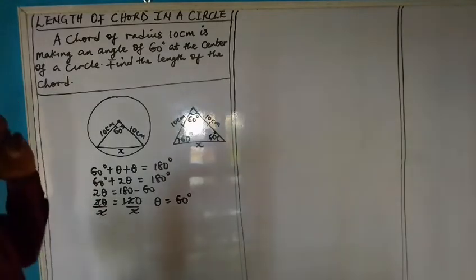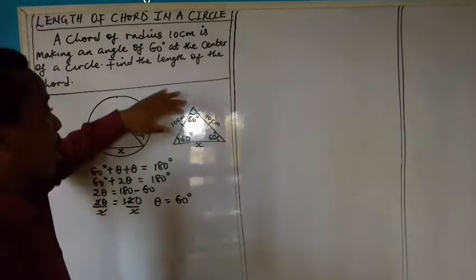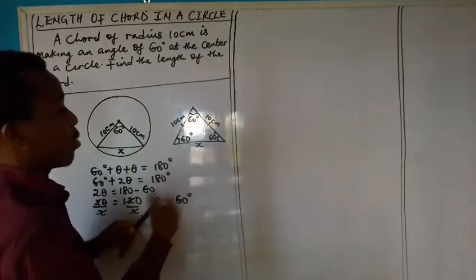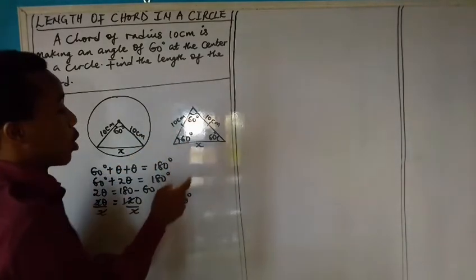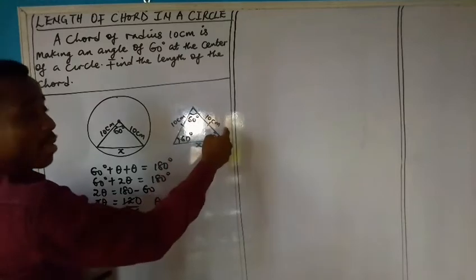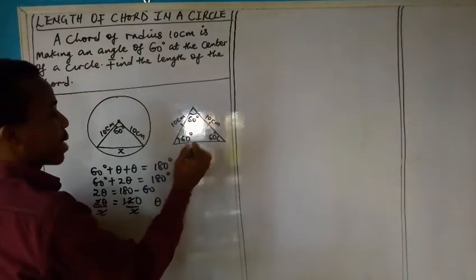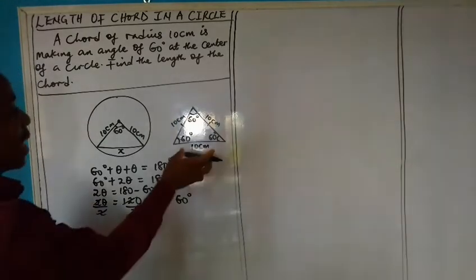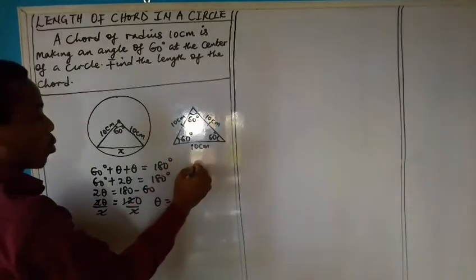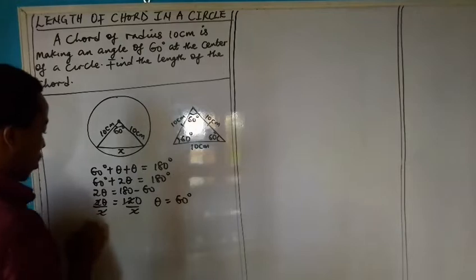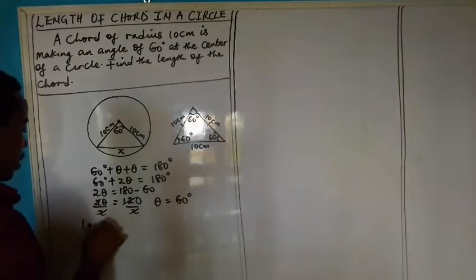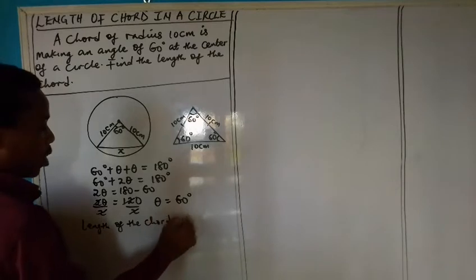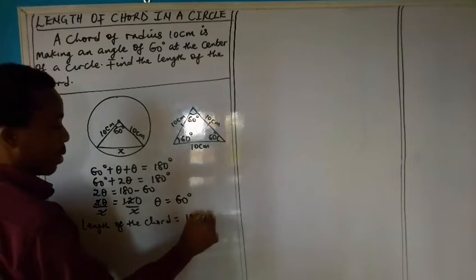Now, if you observe, you'll find out that if all the angles here are equal, it means that we have an equilateral triangle. Which means, if these two sides are 10 centimeters, it means that the other side will also be 10 centimeters. So the length of this chord will be equal to 10 centimeters.